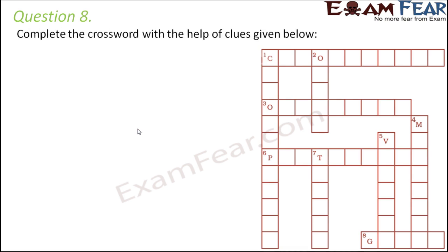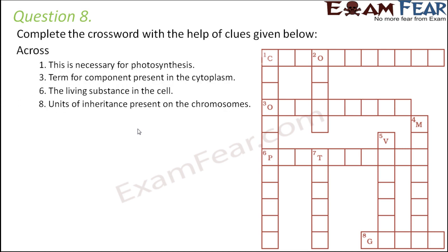Question number eight: we have a crossword to complete using the given clues. For the across clues — number one: 'necessary for photosynthesis' — only green plants do photosynthesis and they are green due to chlorophyll, so the answer is chlorophyll. Number three: 'term for component present in the cytoplasm' — the cell components present in the cytoplasm are organelles, so the answer is organelles.